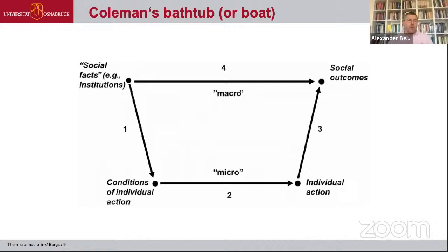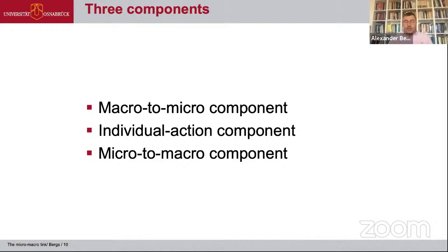Summarizing Coleman's bathtub: we have social facts, institutions, or systems in a first step that provide conditions of individual actions, values, factors, and constraints. Then we have changes on the micro level as number two, and then collective action as number three, which leads to certain outcomes. Coleman has three components: first, the macro-to-micro component, where the system influences the individual. Second, the individual action component on the micro level. Third, micro-to-macro, where individual behavior feeds into bigger systems. We are now going to look at each of these three components from a linguistic point of view.